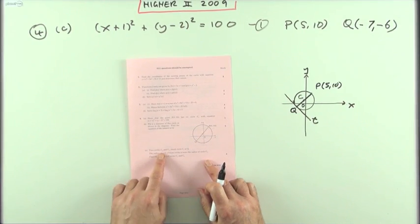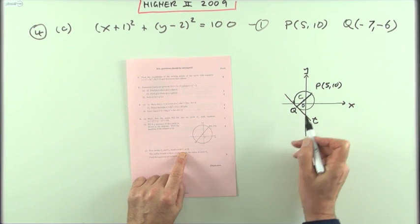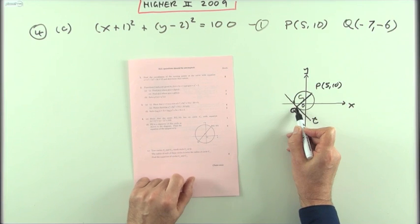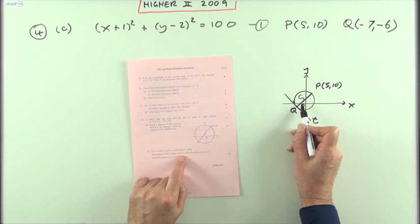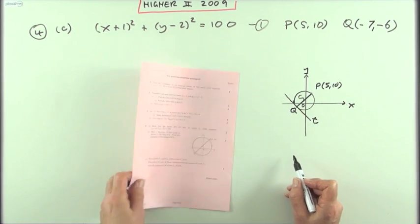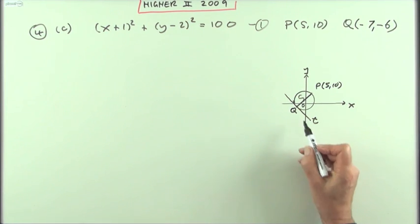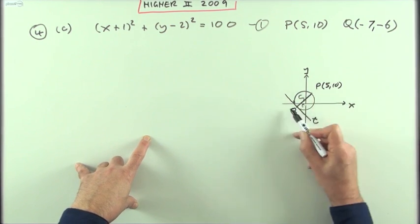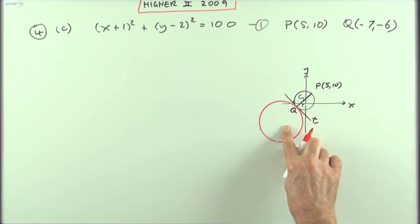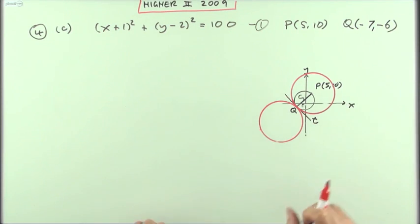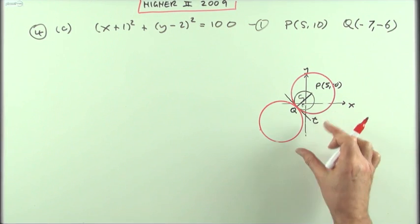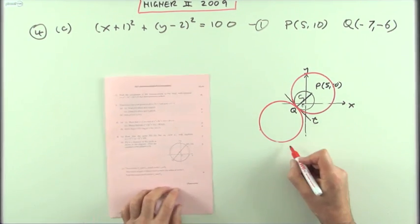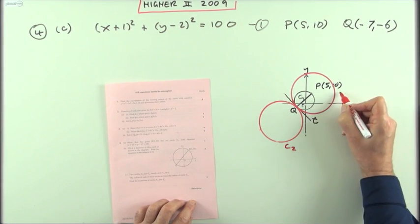Now part c: two circles C₂ and C₃ touch the circle C₁, let's call it center C₁ here, at Q. The radius of these circles are each twice the radius of this, so these circles are twice the size. What are the equations of those two circles? Well that simply must mean that if they touch, one could touch externally, one could touch internally. So what are the equations of these two circles? It doesn't specify which is the external which is the internal, it just says C₂ and C₃, so I'll call that C₂, I'll call that C₃.